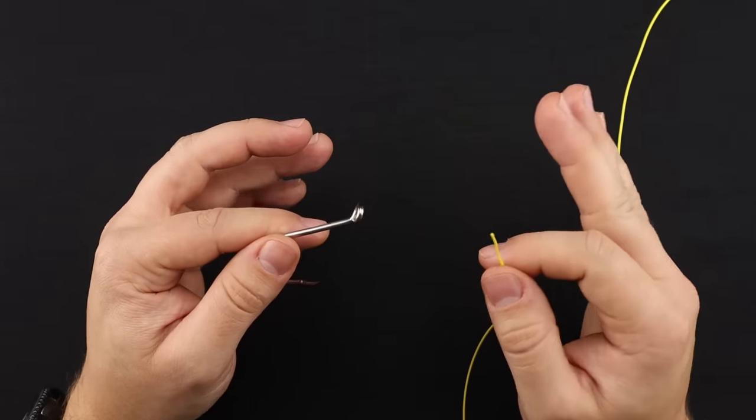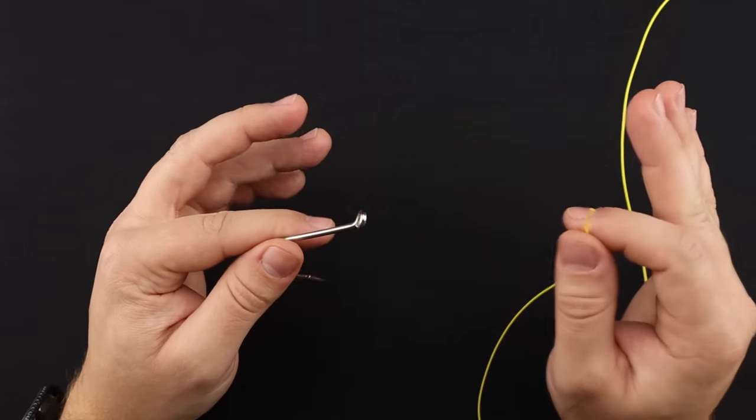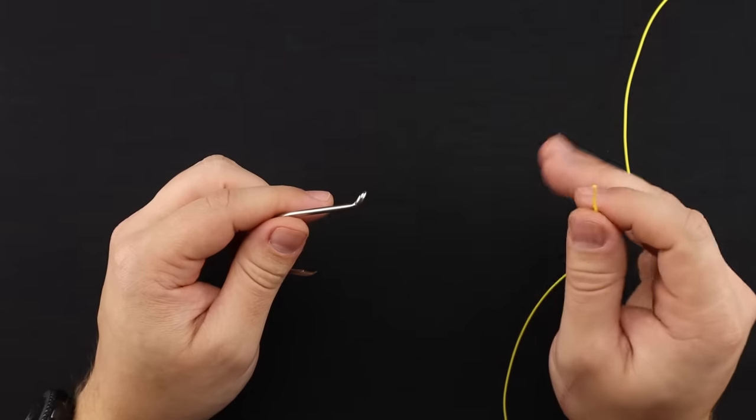Alright, so the Uni Knot is a fantastic knot to learn. It's great for braided fishing line as well as monofilament or fluorocarbon.